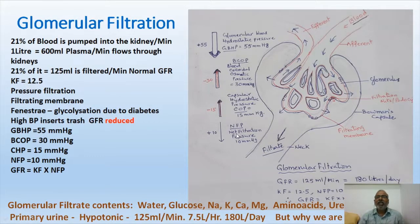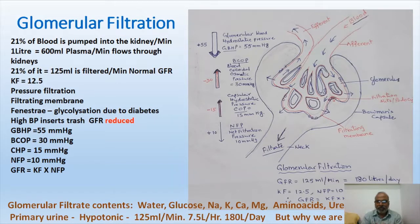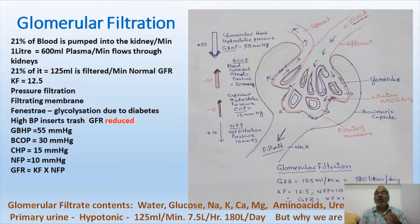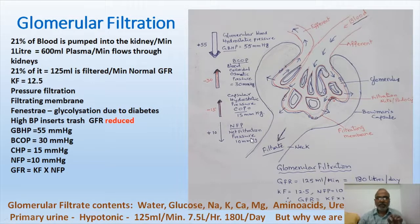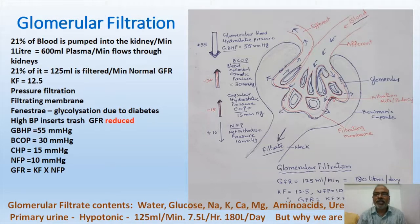The net filtration pressure is 10 mmHg. If a person has hypertension — more blood pressure — the net filtration pressure (NFP) will increase, causing damage to the smooth tissue of the glomerulus. That is why people suffering from hypertension must be very cautious. Glomerular blood hydrostatic pressure is the forward pressure, while opposing pressures are blood colloidal osmotic pressure (30 mmHg) and capsular hydrostatic pressure (15 mmHg), giving a net filtering pressure of 10 mmHg.